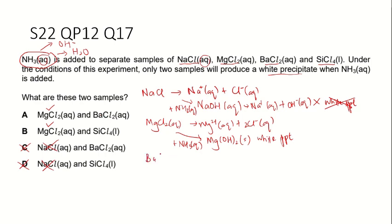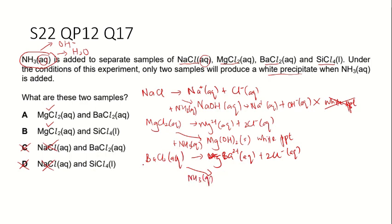Barium is a Group 2 element, just like magnesium. Barium chloride solution contains barium ions and chloride ions. When ammonia is added, the barium ion reacts with hydroxide ions from the ammonia solution to form barium hydroxide. Unlike magnesium hydroxide, barium hydroxide is more soluble, so it forms an aqueous solution with free moving barium ions and free moving hydroxide ions — no white precipitate is produced.